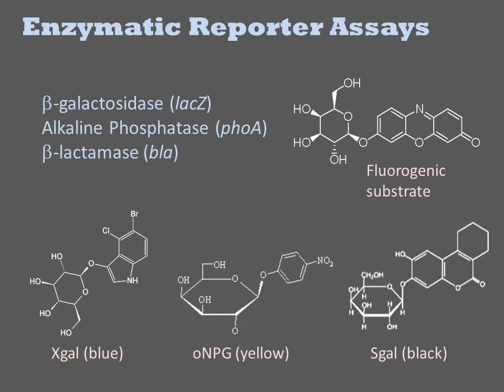These enzymatic reporter genes are often used in the same context as GFP and RFP. The measurements are often more precise and sensitive due to the amplification obtained from watching conversion of a substrate rather than the protein itself. For example, to get 100x over background signals from GFP in E. coli, you typically must express it from a high-copy plasmid. However, a genomically encoded LaxZ can provide 10,000-fold signals over background.